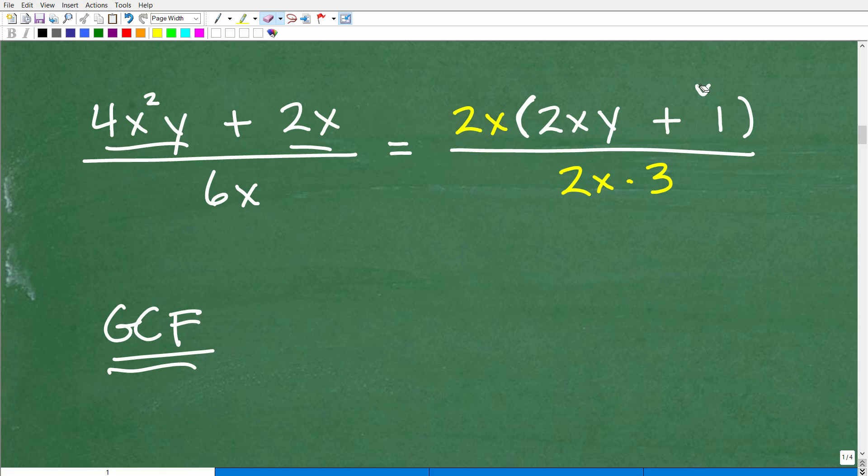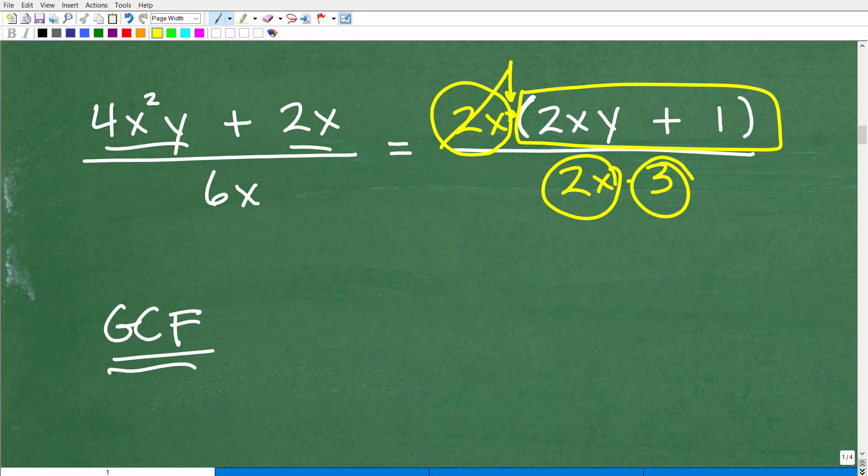Now, if I showed you this expression right here, okay, 2X times 2XY plus 1 over, even if this was 6X, you can think of this as 2X times 3. This is all multiplication. This operation right here, right here, is multiplication. So this is a factor, okay? This is another factor. And then this is a factor, and this is a factor. So now I can cross-cancel those two Xs as they are like factors.